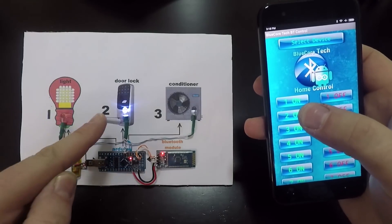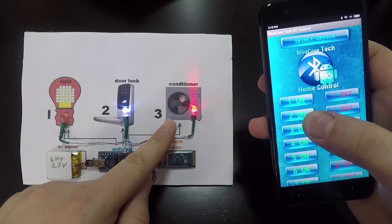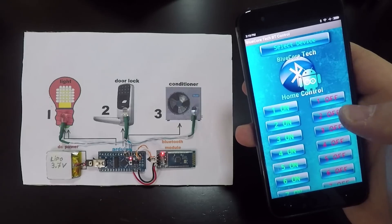Very easily you can replace the LEDs with DC relays, and then you can power on and power off real devices like door locks, light bulbs, and even air conditioners.